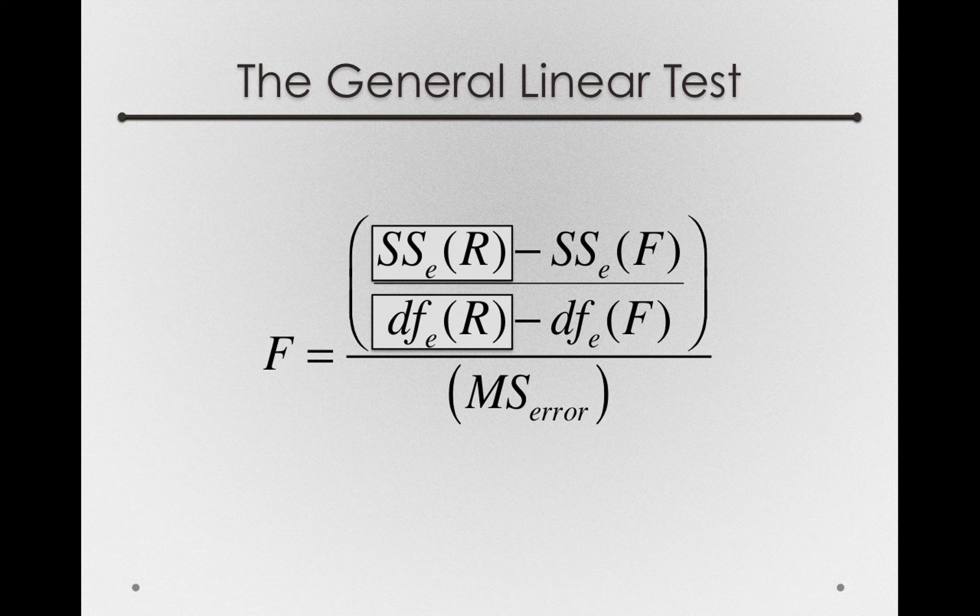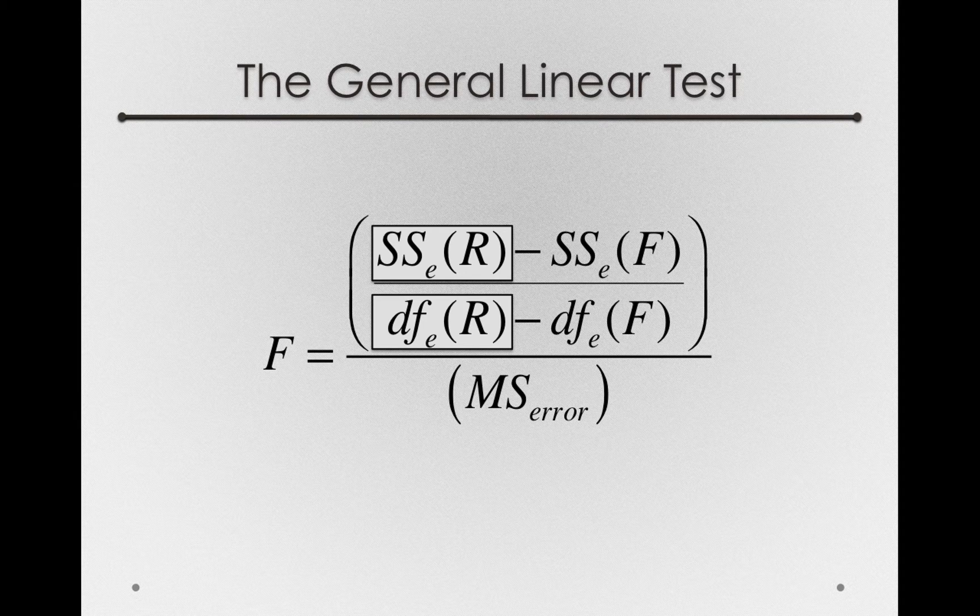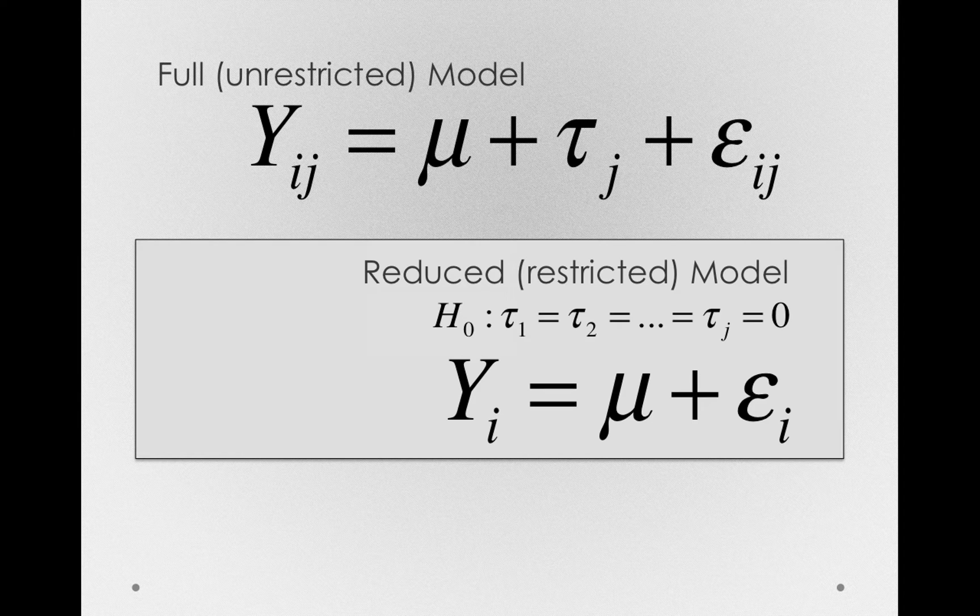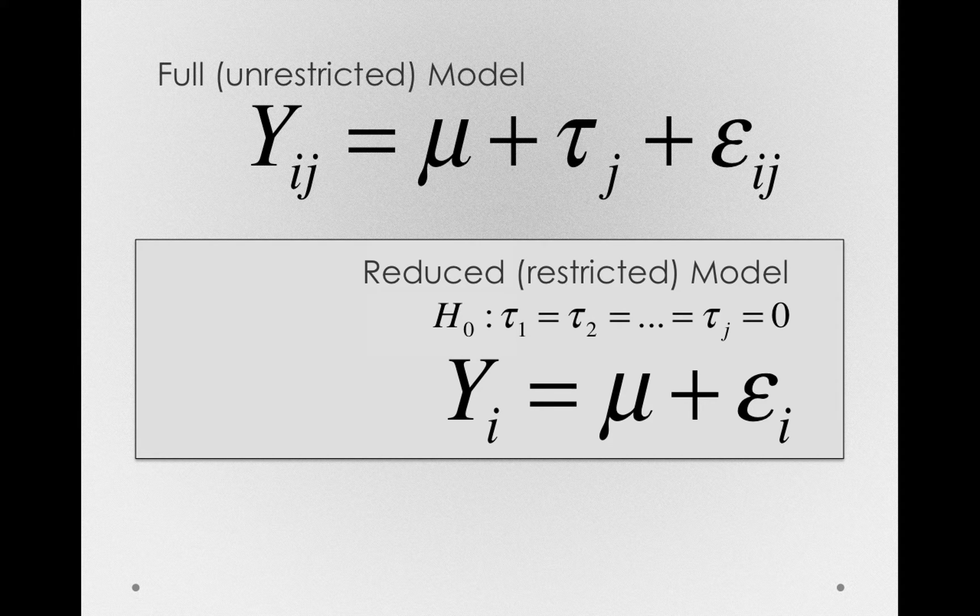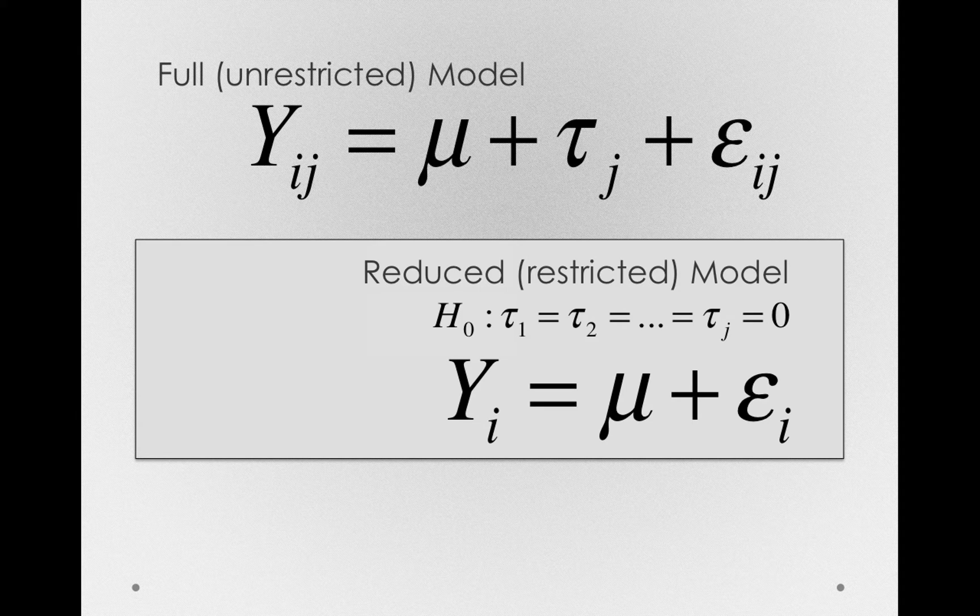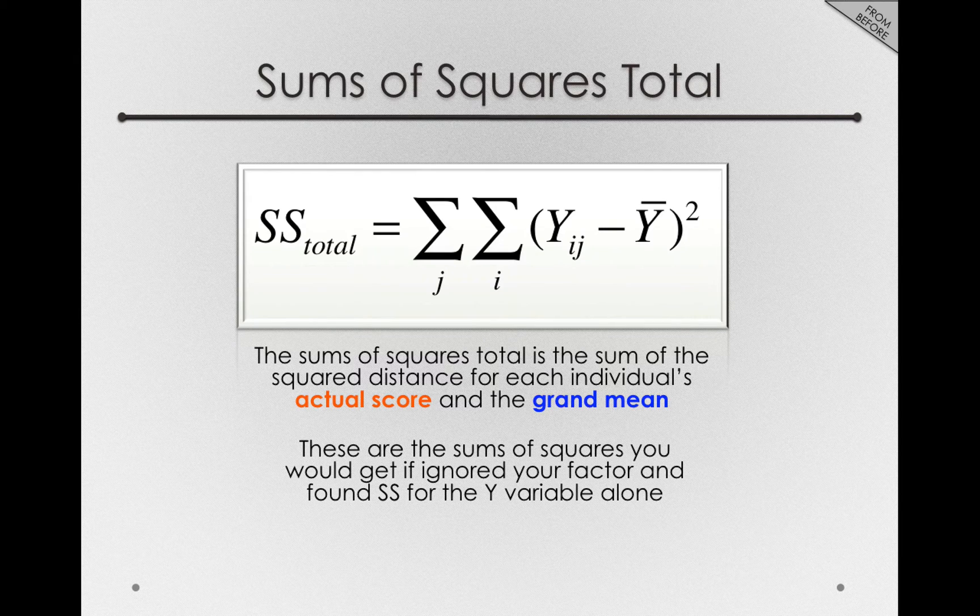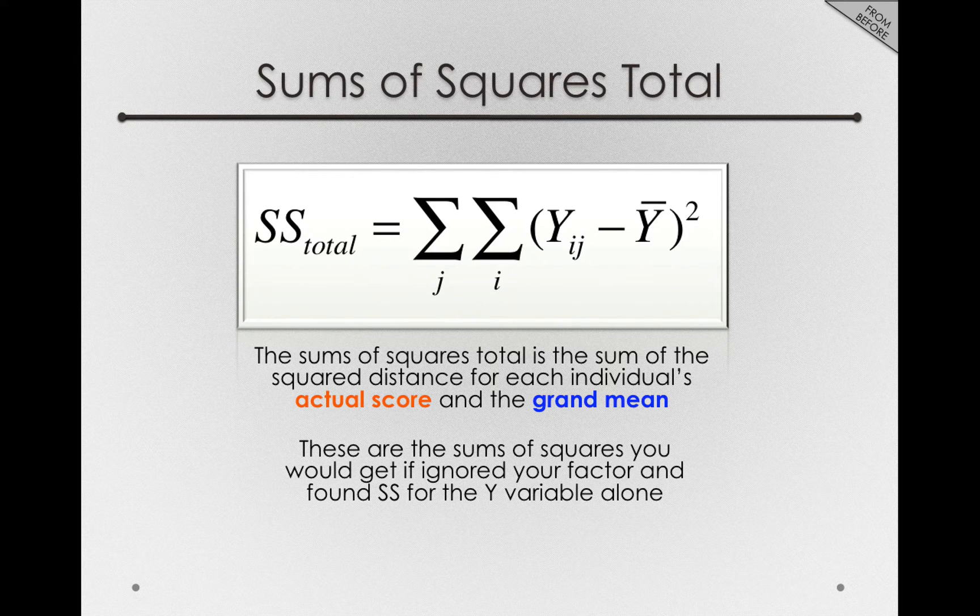Let's tackle this piece, the sums of squares error for the reduced model and the degrees of freedom error for the reduced model. Let's step back and look at what our reduced model is. This is a model where all we're predicting for individuals is the mean. And so the sums of squares for this model, the error term for this model, is simply going to be the sums of squares total. This is the deviation of every person to the grand mean.